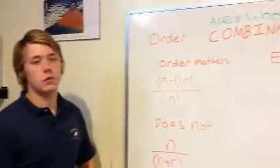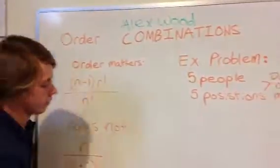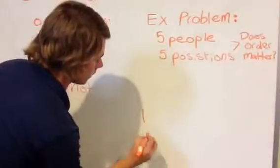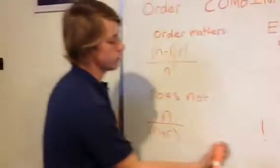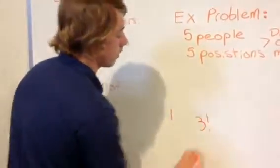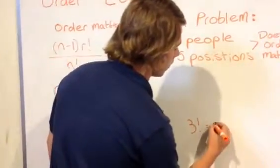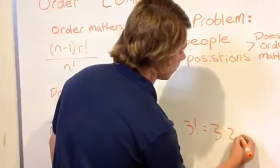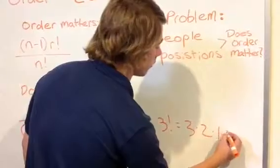So, first, I'm going to explain to you what this exclamation point right here means. For example, if you see a number that says 3 exclamation point, that is equal to 3 times 2 times 1, and that would equal 6.